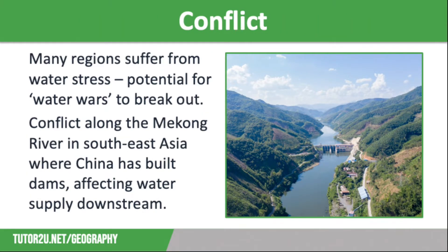Our last impact of water insecurity is conflict. With so many regions around the world suffering from water stress, water is a hugely valuable commodity, and many feel that in the future, as even more pressure is exerted on supplies, there is the potential for water wars to break out. There are already several areas around the world where conflict is occurring because of shared water resources. For example, along the Mekong River in South East Asia, where China has built dams to reduce the risk of flooding and to generate hydroelectric power. This has had an impact further downstream as the reduced water level has affected farming and fishing industries in Vietnam and Cambodia.